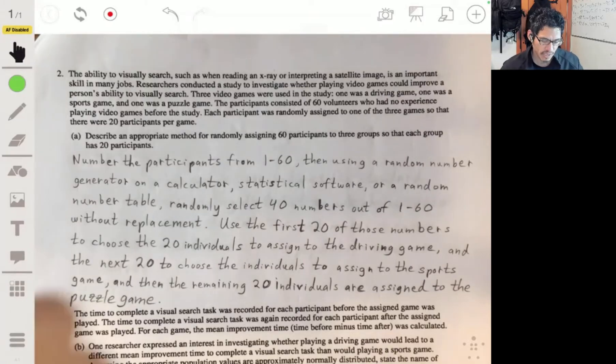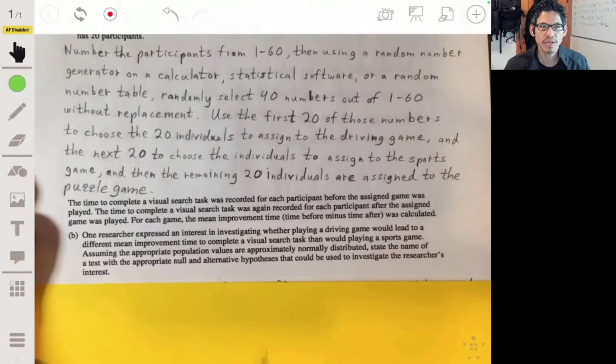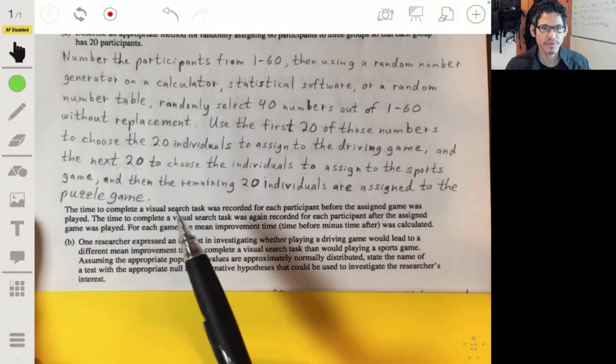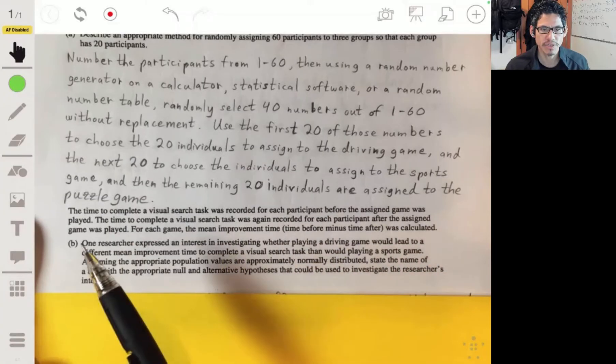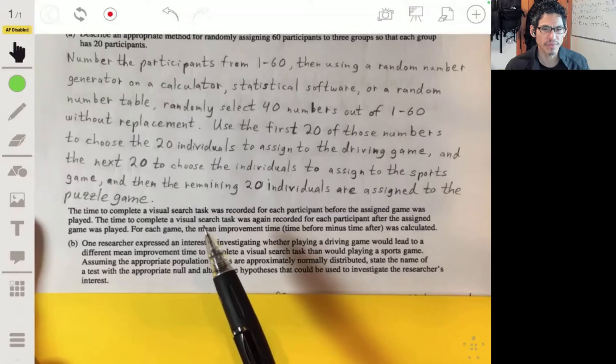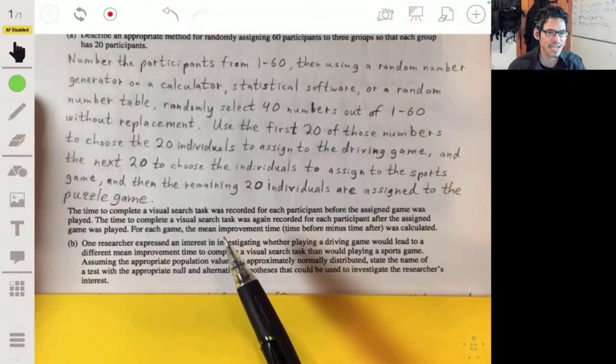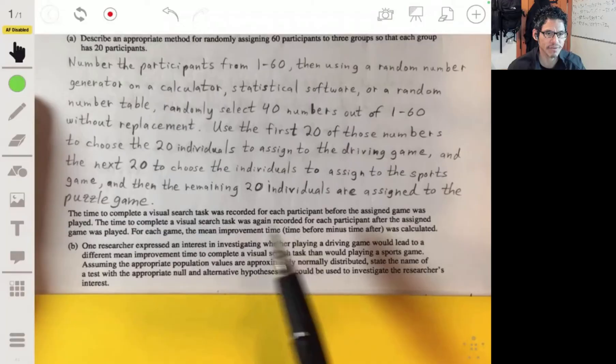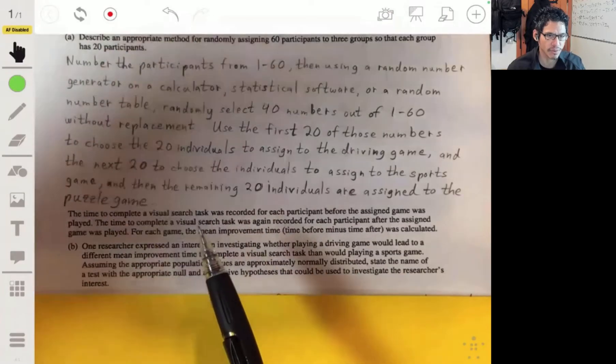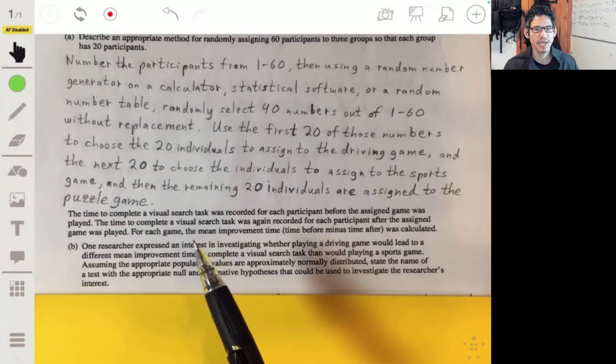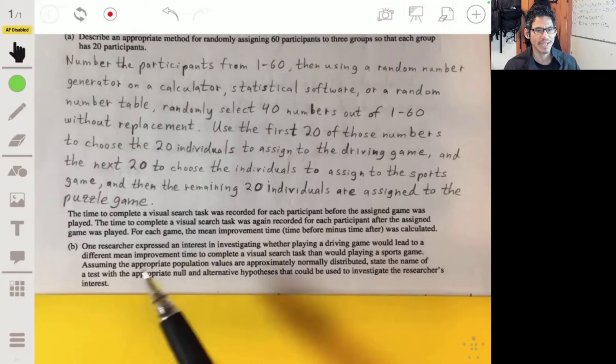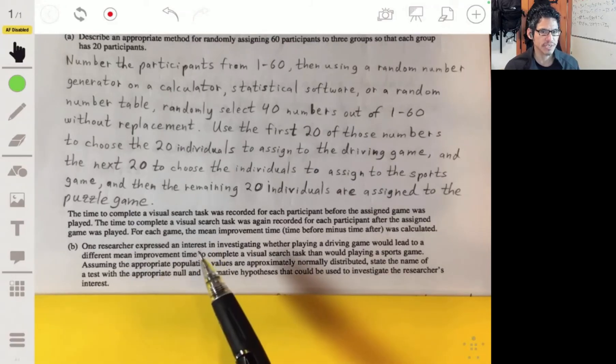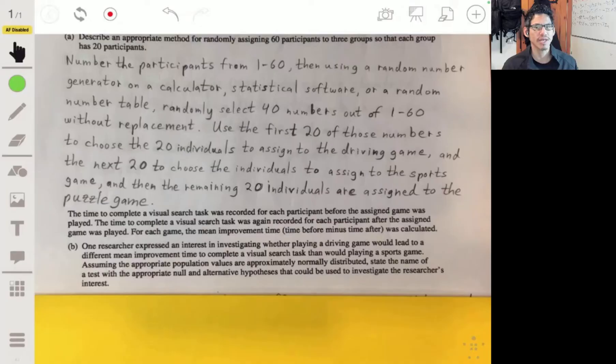Right now, the second part is saying the time to complete a visual search task was recorded for each participant before the assigned game was played. A visual search task was again recorded for each participant after the assigned game was played. So they recorded the time before and after, and they wanted to see basically how much they improved. And this has to do with the researcher because they wanted to see whether the type of game had an effect on how well you improved.